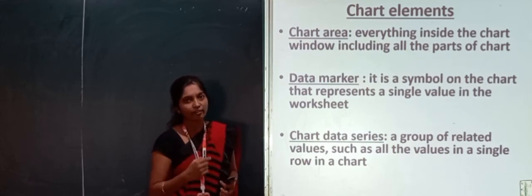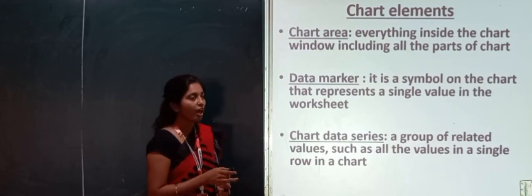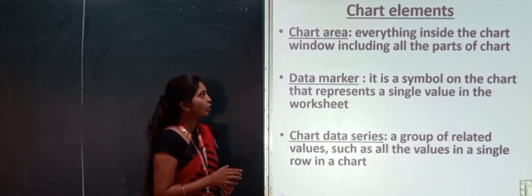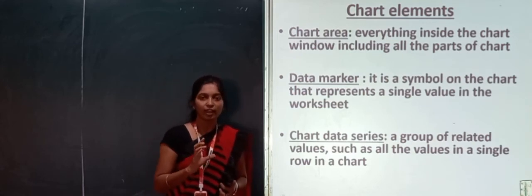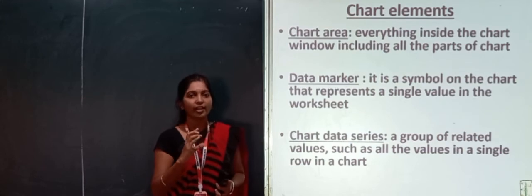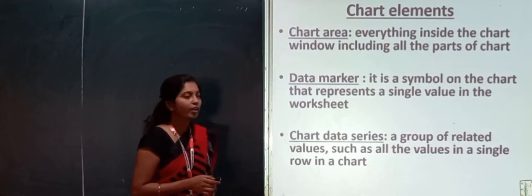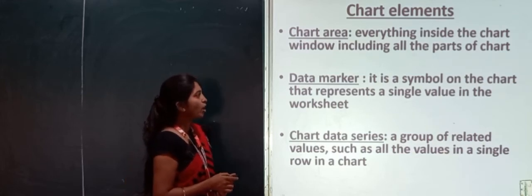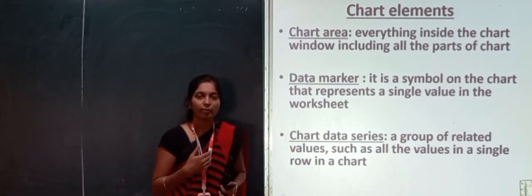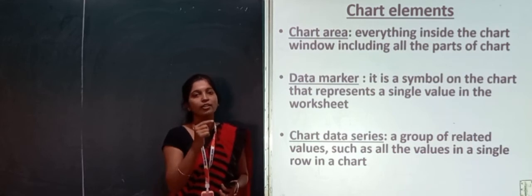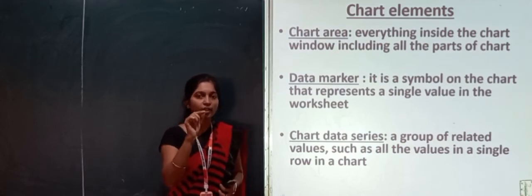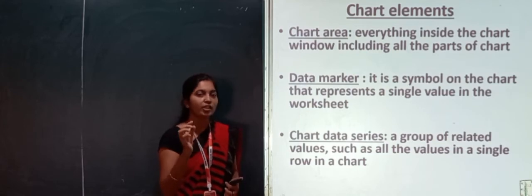The first chart element is chart area — everything inside a chart window, including all the parts of the chart. Then data marker — it is a symbol on the chart that represents a single value in the worksheet. Different students have different marks, and those marks are represented as data markers in the chart.